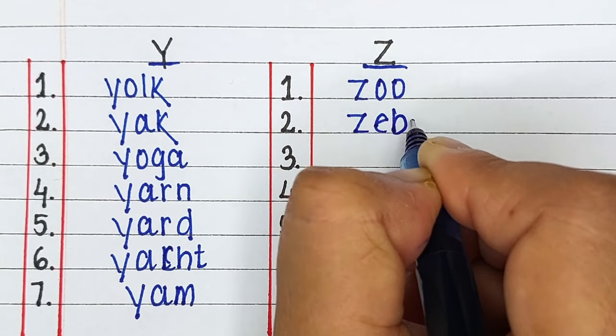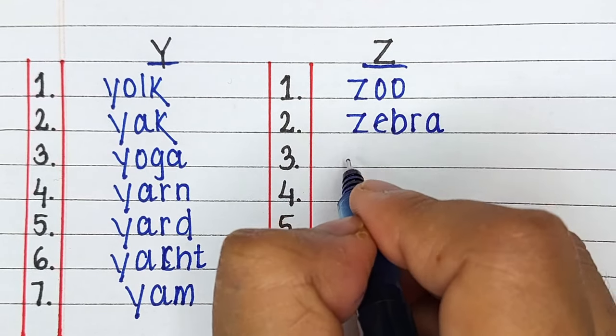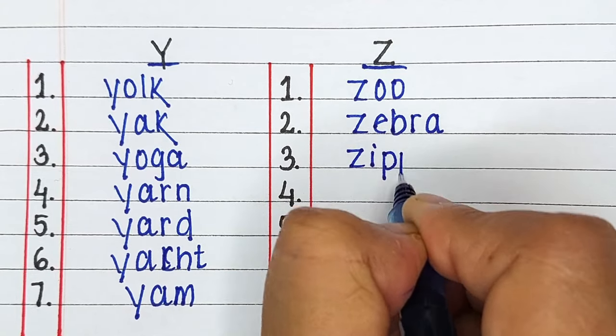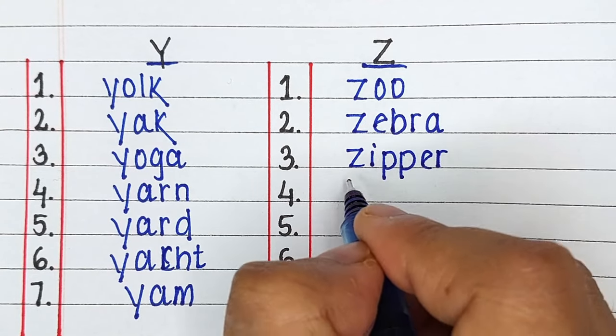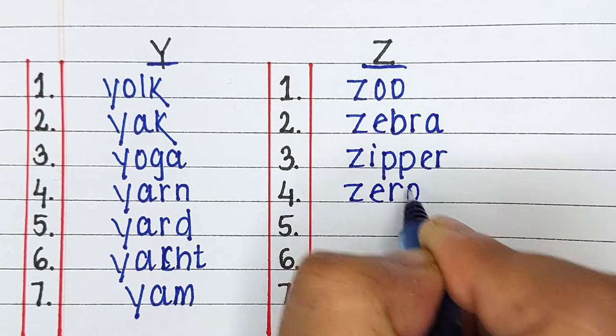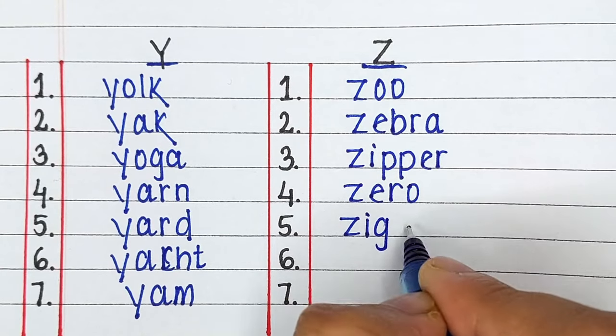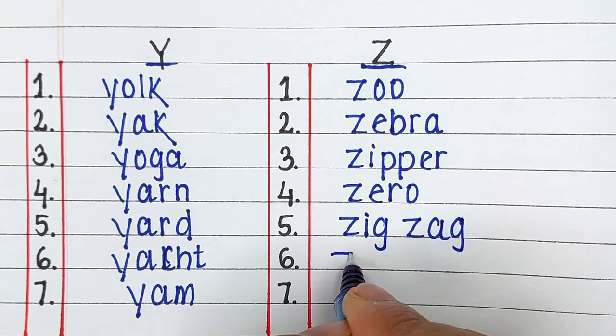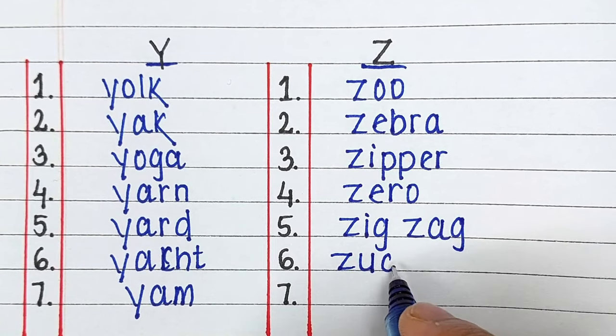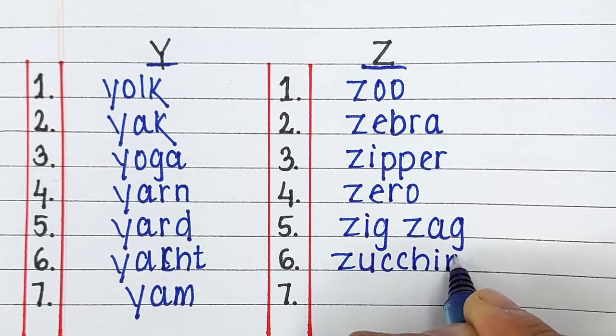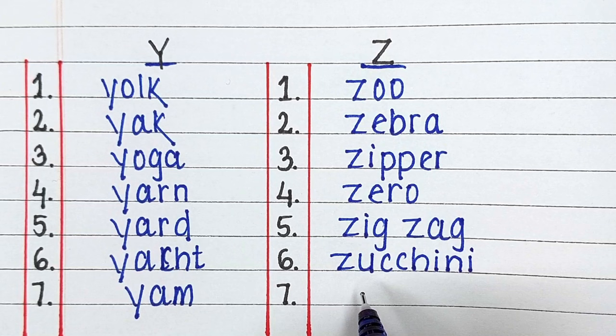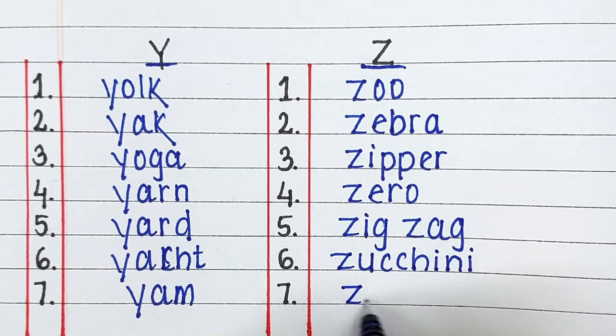Last one is Alphabet Z. The words starting from letter Z are Zoo, Zebra, Zipper, Zero, Zigzag, Zucchini and Zucchini.